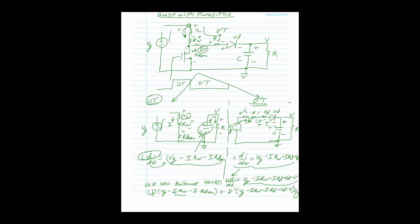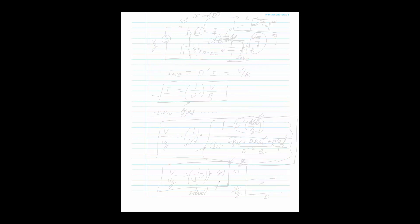Now we need one more thing: we must determine what I is and how it relates to the output current. Drawing the boost converter, we note that I is the inductor current — it is not the output current.